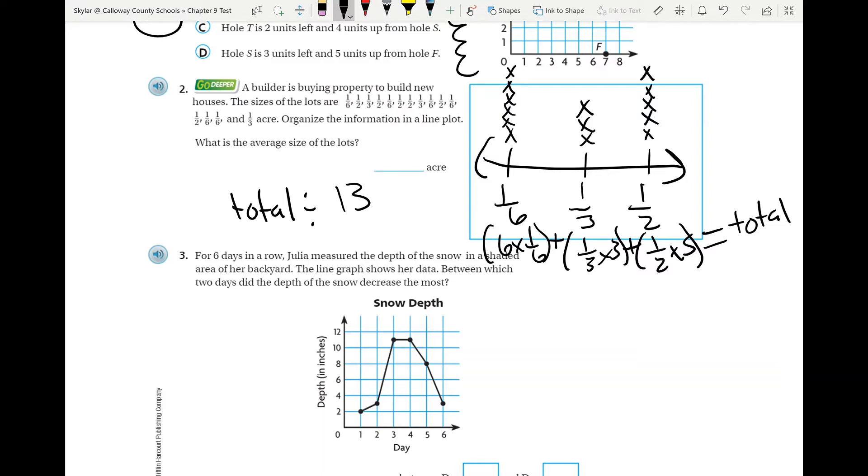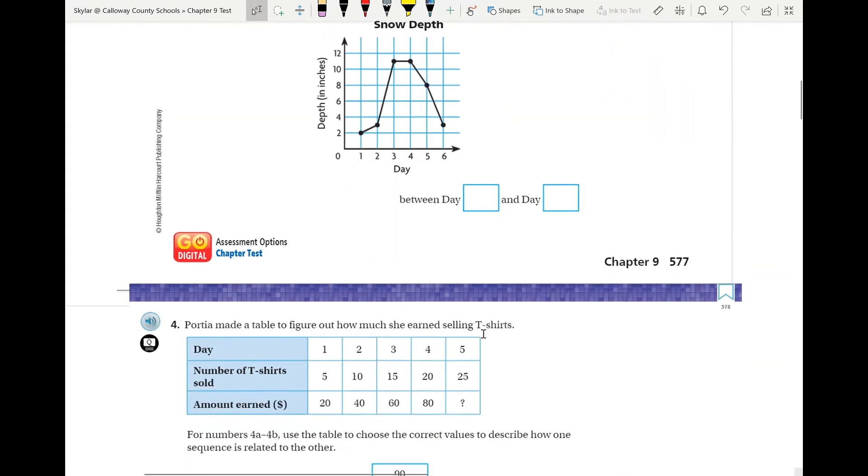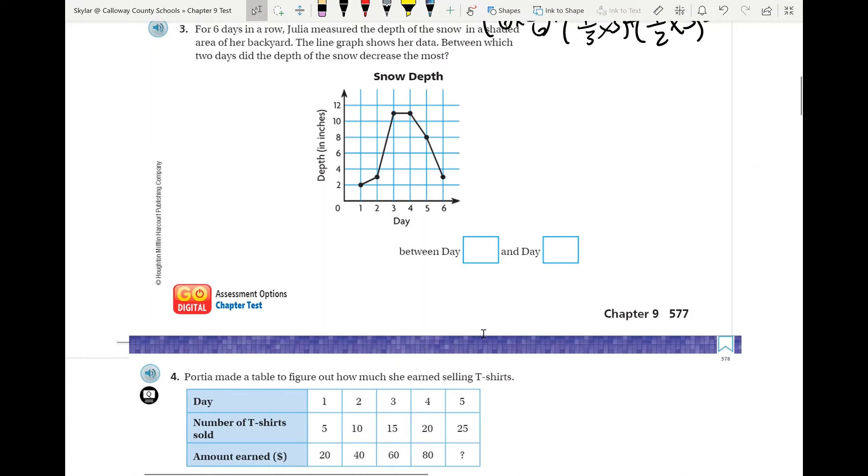Number three: Julia measured the depth of snow in a shaded area of her backyard. The line graph shows her data. Between which two days did the depth of snow decrease the most? So you are looking for a decrease. That means you need to be looking for somewhere on the graph where it goes down, and you need to find the largest decrease.